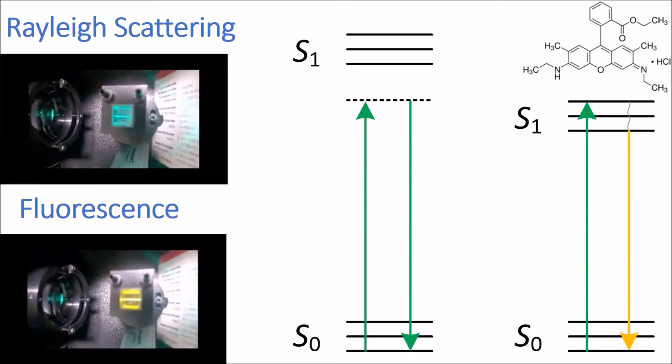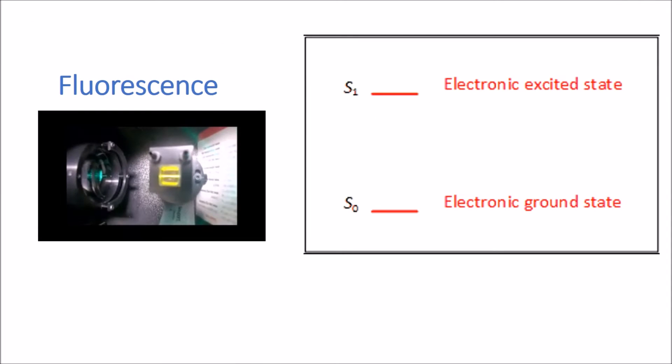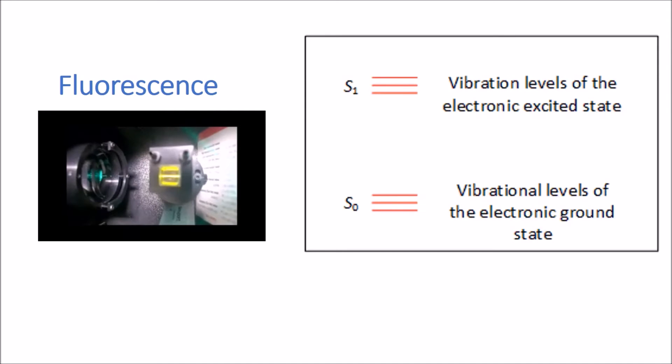If we look at the Jablonski diagram in some more detail, we can see that we've got two electronic states. We've got an electronic ground state and an electronic excited state. Each electronic state has a series of vibrational levels.